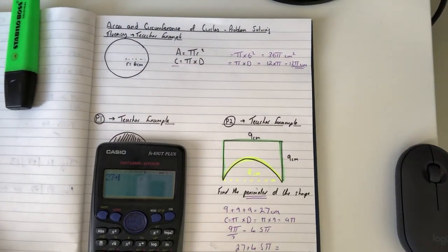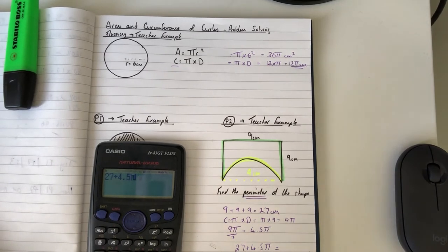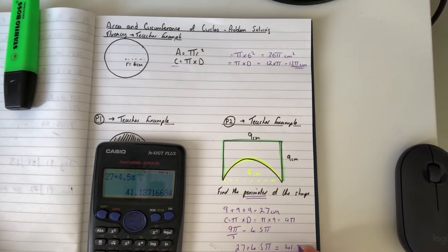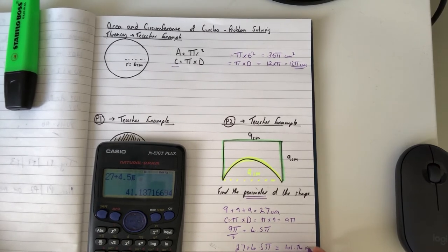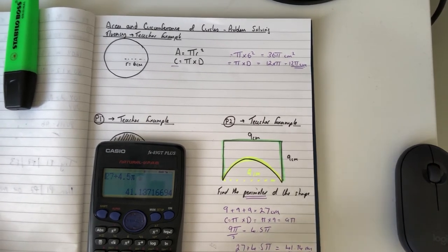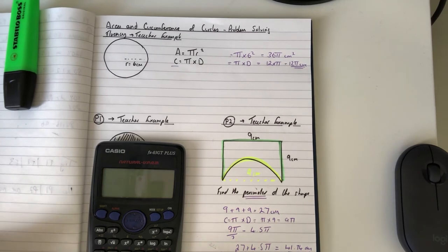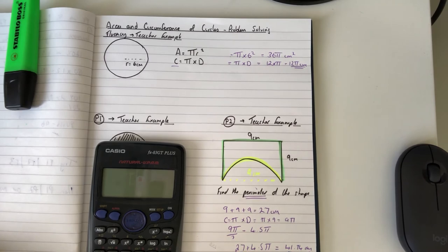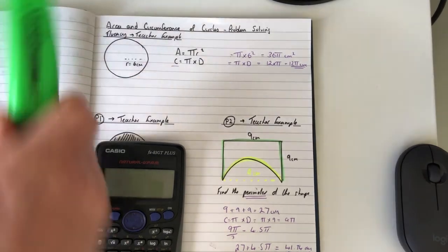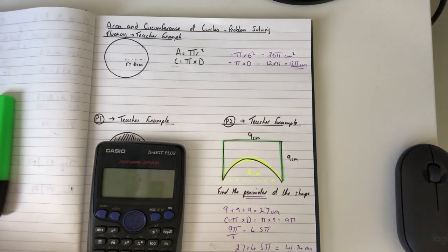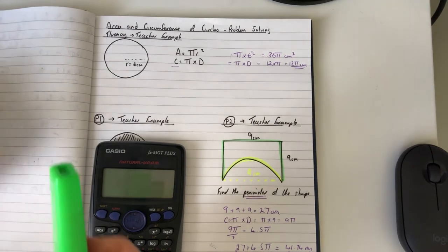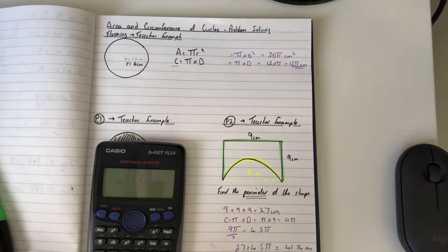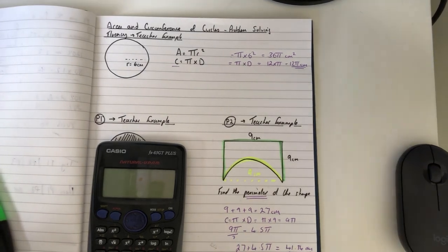That equals 41.14 centimeters to two decimal places. Now P3 and P4, you start using a mixture of area and circumference. You have to pick them out, that's where you highlight the keywords. Make sure you're highlighting the keywords. The answers are provided, get stuck into it.